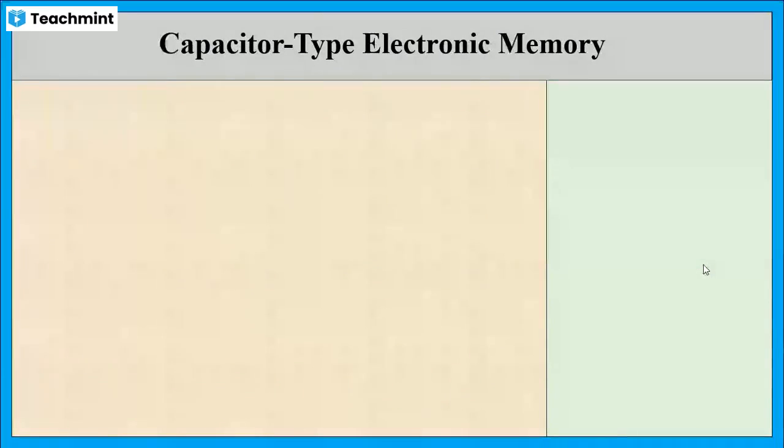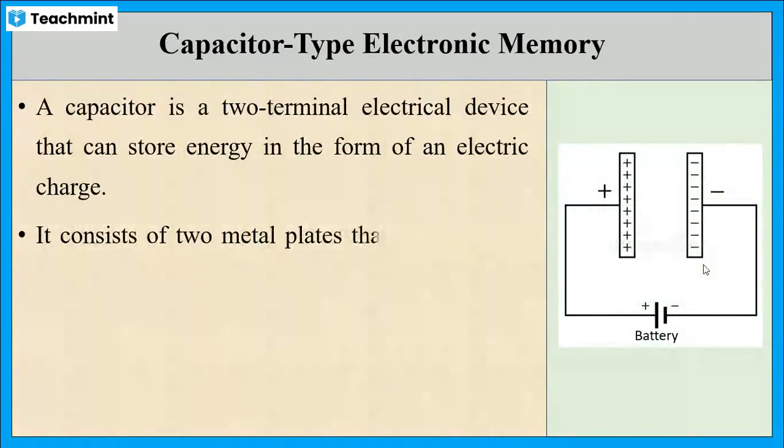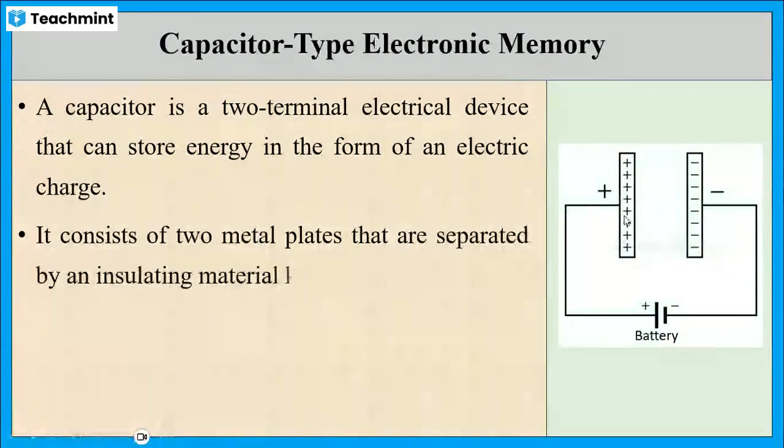Next type is capacitor type electronic memory. A capacitor is an electrical device which is used to store energy in the form of electric charge. If we see the construction of a capacitor, it consists of two metal plates that are separated by an insulating material known as dielectric.